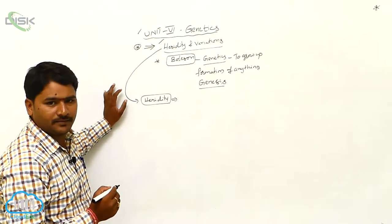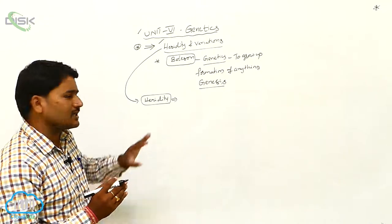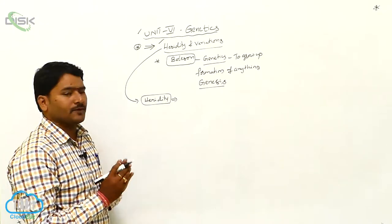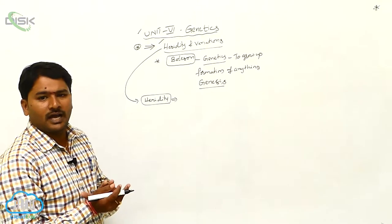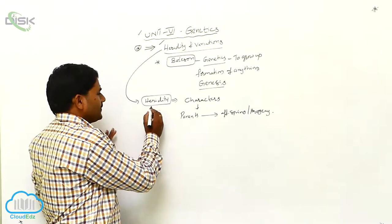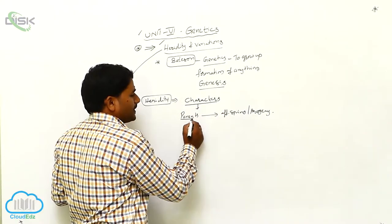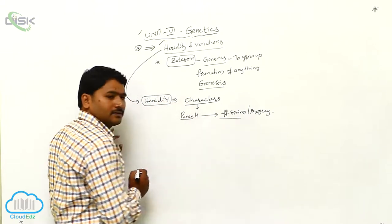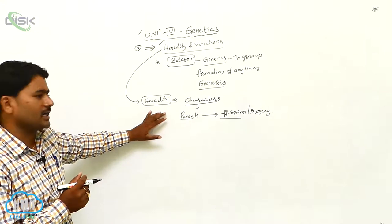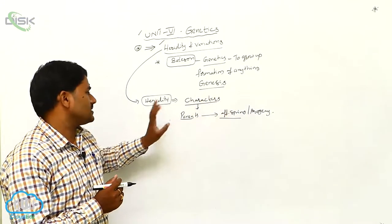Let us see what is heredity. Heredity is a process in which characters are transmitted from one generation to another generation. The meaning of heredity is transmission of characters from parents to offspring. So heredity is a process of transmission of characters from parents to progeny.